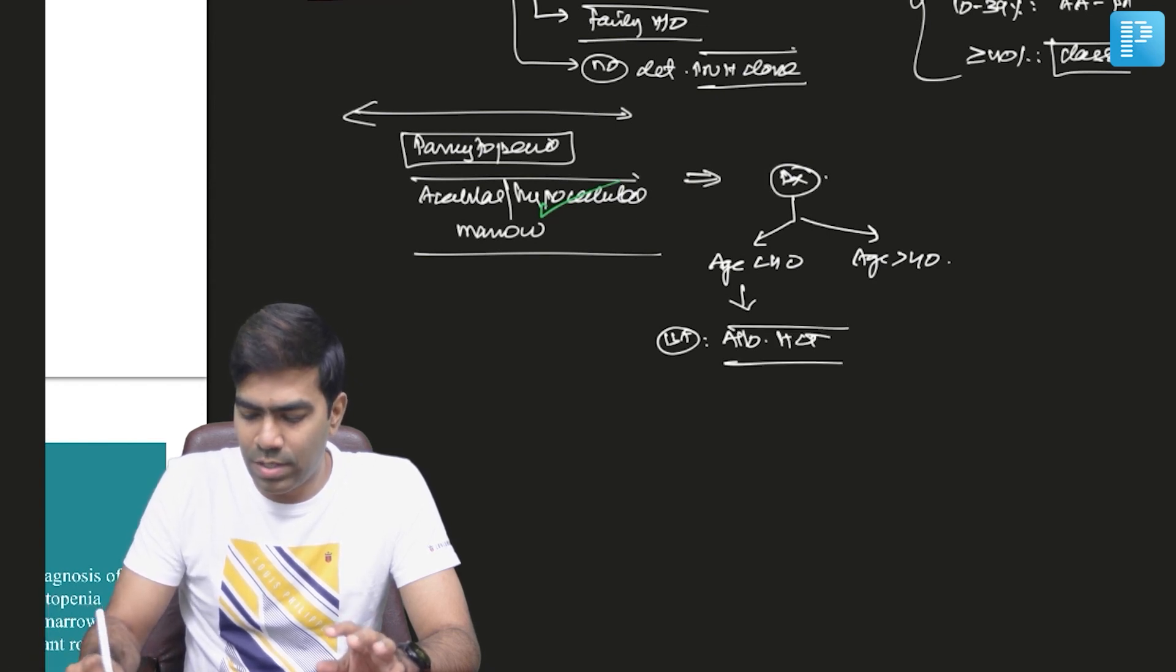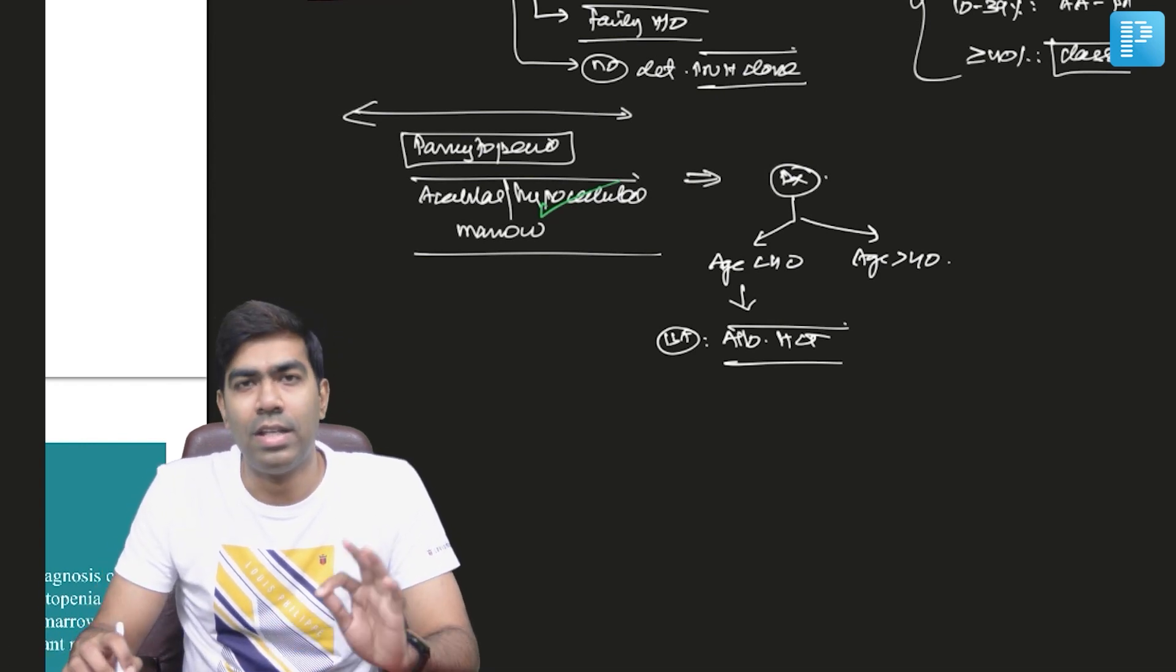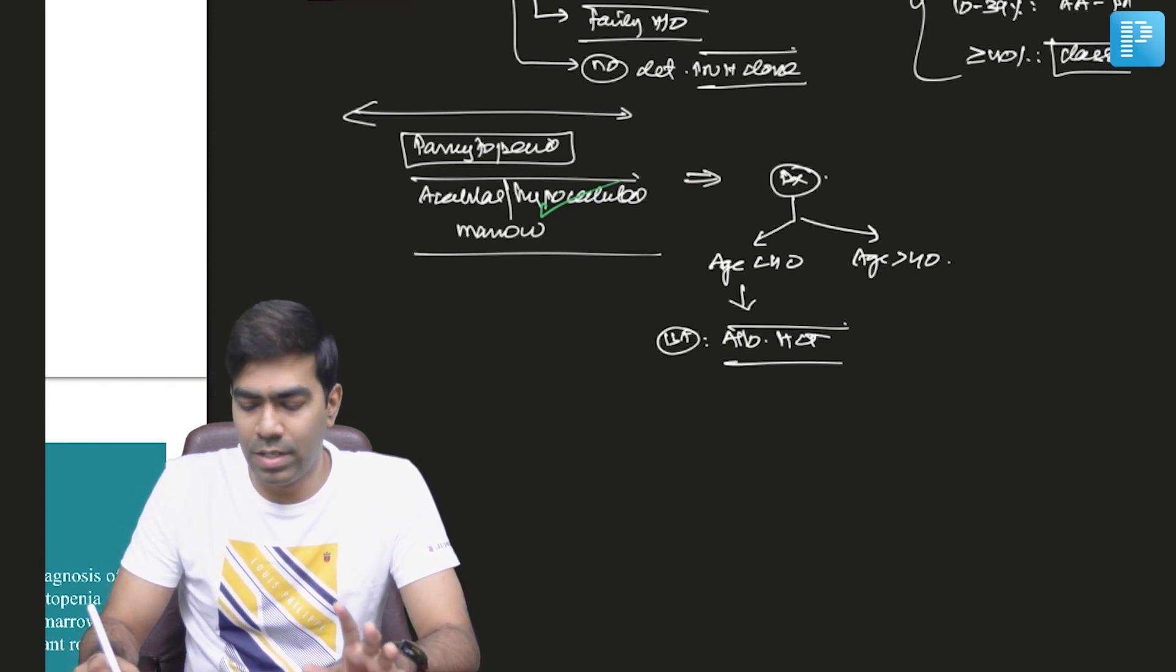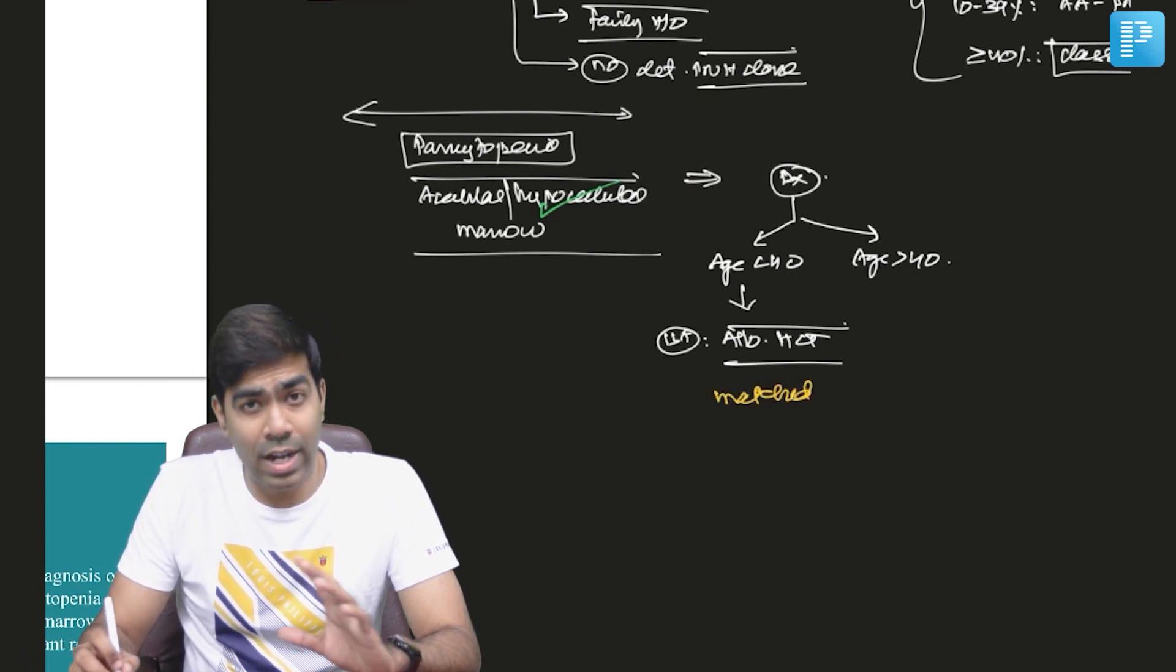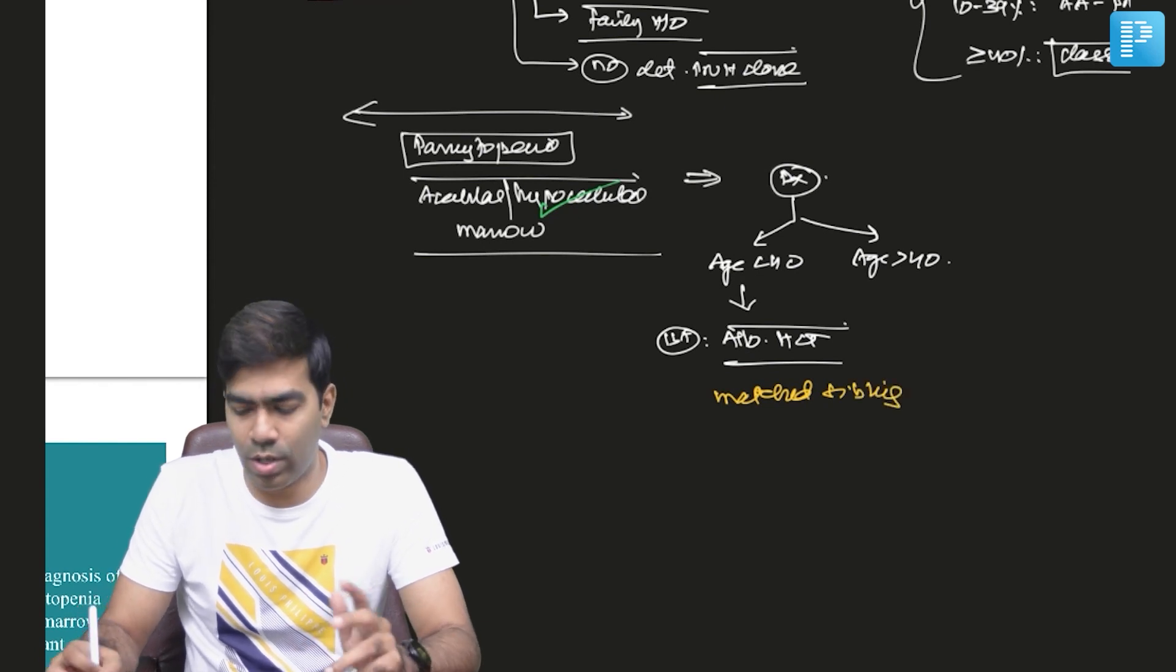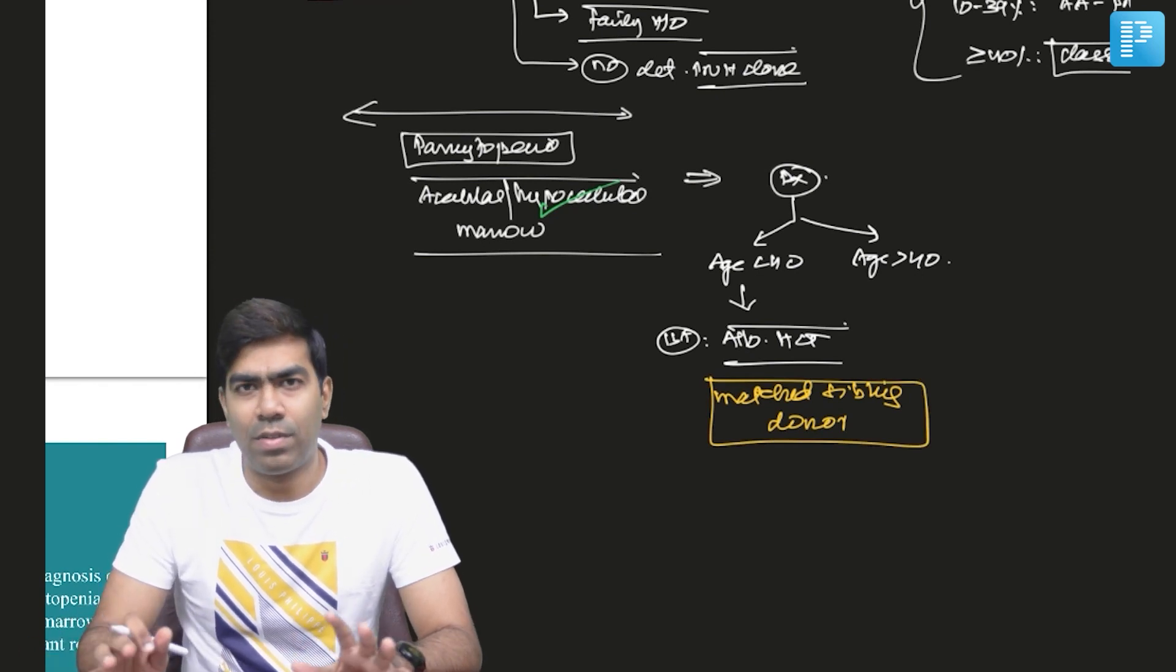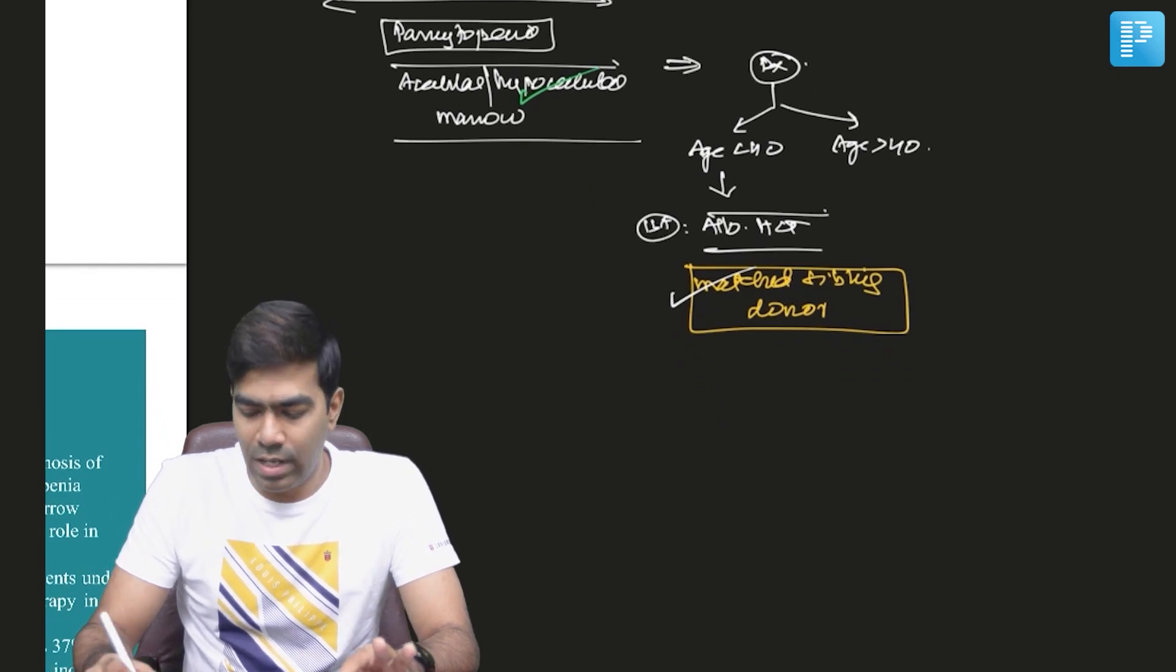So that is going to be the primary first line treatment option. But remember, the best donor for allogeneic hematopoietic stem cell transplantation will be a matched sibling donor. This is something that you need to know for an entire hematology. Matched sibling donor or we can call it as a matched related donor. So this is the best donor. There are multiple different types of donors but this is the best donor. If it is available then go for